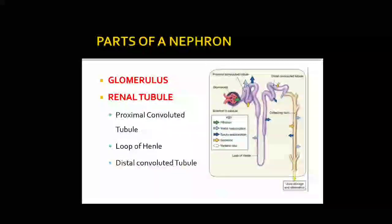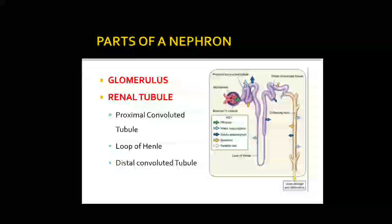Now what are the parts of a nephron? The nephron contains the glomerulus and the renal tubules. The glomerulus is the blood capillaries which supply blood to the nephron. The tubular part, the renal tubule, contains the proximal convoluted tubule, loop of Henle, and distal convoluted tubule.